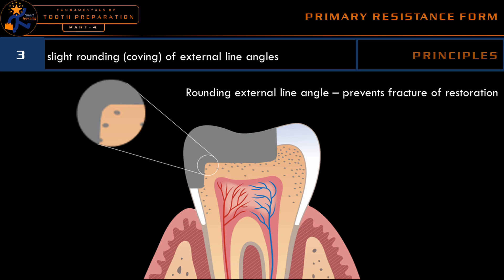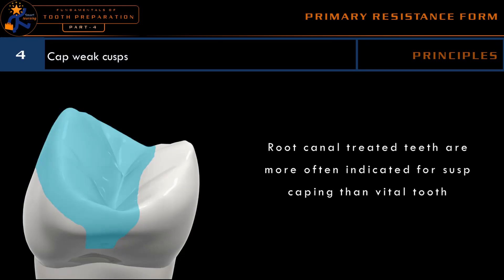The internal line angles in a tooth preparation are rounded with the help of the bur at the time of tooth preparation — no extra measures are needed for rounding the internal line angles. The external line angle, for example the axio-pulpal line angle, should be rounded with the help of a gingival marginal trimmer. If we are not rounding the external line angle, the restoration will fracture. One of the most common reasons for fracture of Class 2 amalgam restoration is not rounding the axio-pulpal line angle.